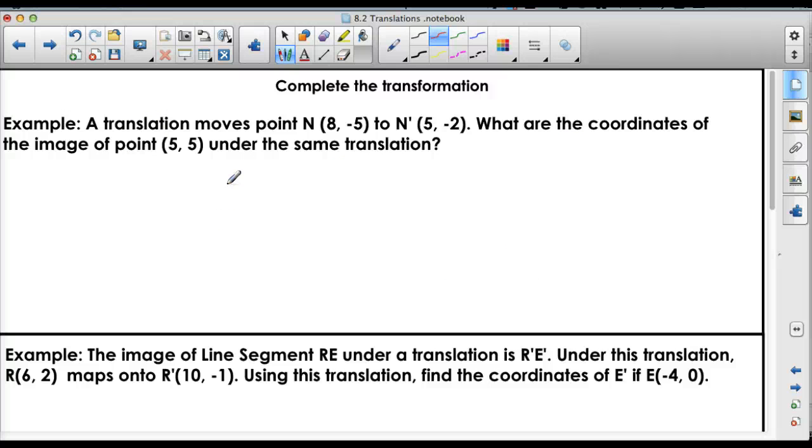This is your next page. It says, complete the transformation. This example says a translation moves point N, (8, -5), to N prime, which is (5, -2). Now, what are the coordinates of the image of (5, 5) under the same translation? So whatever happened here, we want to do to this point. So we just have to figure out what the translation was. So here, the coordinates of N, we know were 8 and -5. And we wanted to do something so that way we got a 5 and a -2. So this is what it started as, 8, and we want to get it to 5. Well, how did we do that? Well, we subtracted 3, right?